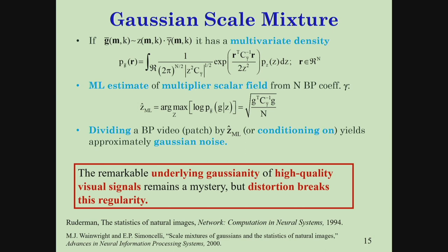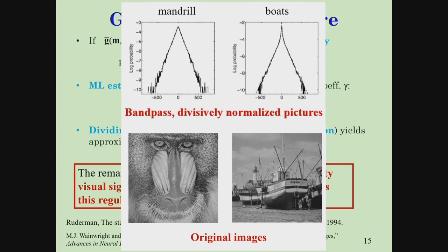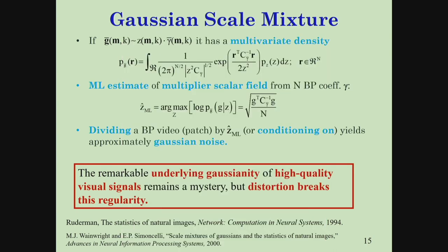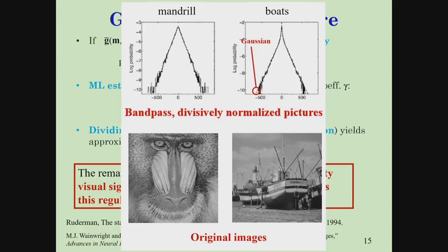Here are a couple of pictures which we bandpass filter — just a wavelet — and then divisively normalize by the variance field, which we use that equation to estimate. On a log scale, this shows the histograms. If it were not on a log scale, you'd have a bell-shaped curve, but this way you can see things with more precision. Underlying it, you can see the Gaussian in dotted lines. It's almost a perfect fit — empirically. We took pictures, bandpass filtered them, estimated the variance field, divided it out, and you get something that's basically Gaussian noise.